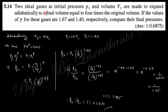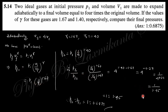Question 15: Two ideal gases at initial pressure P₁ and volume V₁ are made to expand adiabatically to a final volume equal to four times the original volume. The values of gamma for these gases are 1.67 and 1.40 respectively. Compare their final pressures. Using PV^γ = constant, the final pressure for each gas is found, and their ratio is calculated.